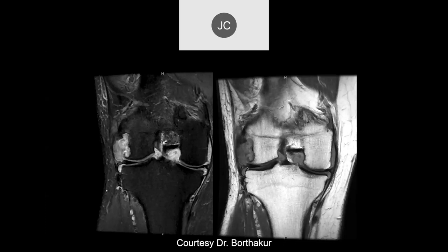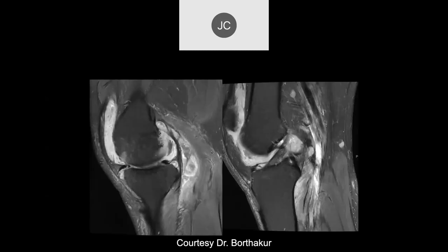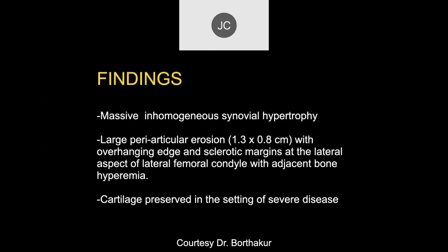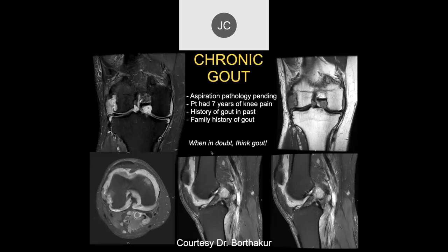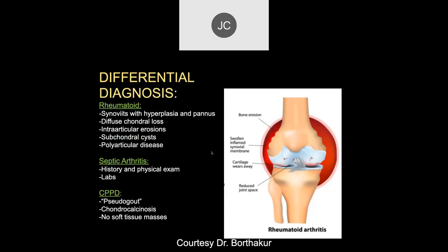A case of chronic gout shows a large erosion at the lateral femoral condyle with heterogeneous soft tissue filling the joint space and extensive synovial thickening. It is important to treat gout to prevent reaching this chronic stage where everything starts eroding.